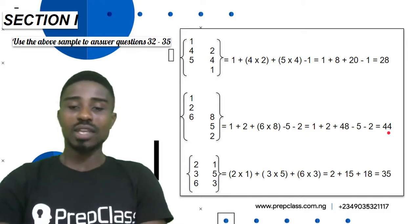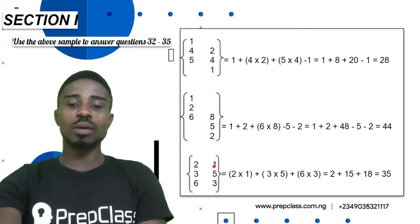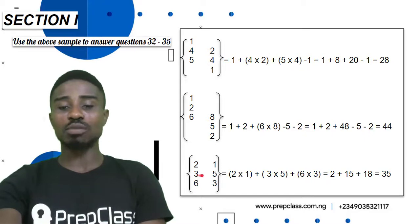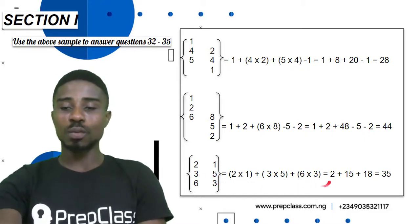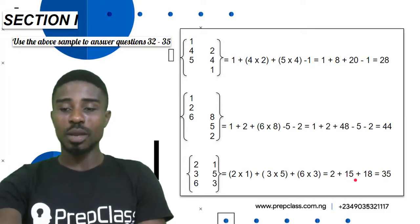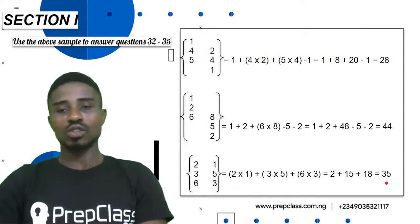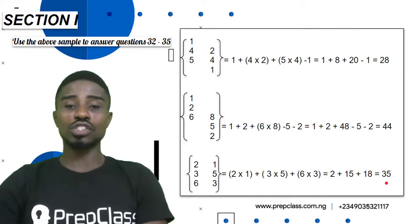For the third sample we have numbers side by side, so it will be (two times one) in brackets plus (three times five) in brackets plus (six times three). Two times one is 2, three times five is 15, six times three is 18. Adding them all up: 2 plus 15 is 17, plus 18 equals 35. This is how we'll be solving questions 32 to 35.